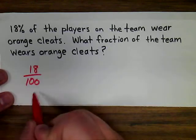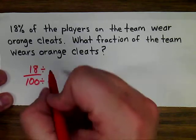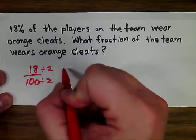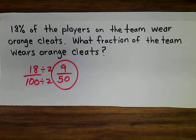we're simply going to write it as 18 over 100, and then simplify. The greatest common factor of 18 and 100 is 2, and so 9 out of 50 players are wearing orange cleats.